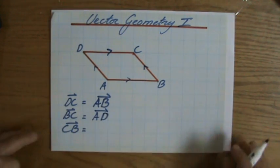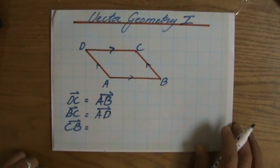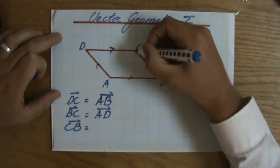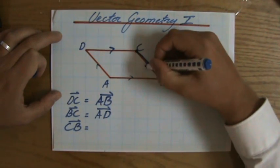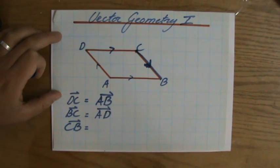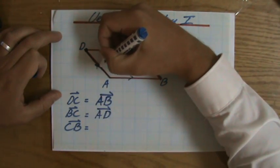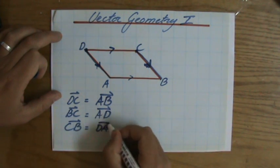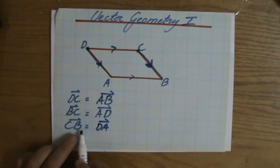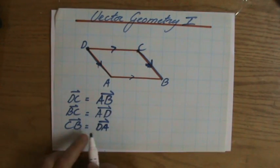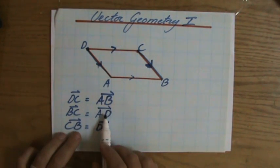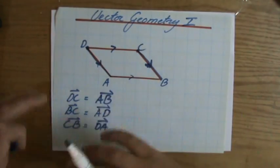vector geometry. Last one: CB, from C to B. Which other vector is the same? That is going to be from D to A, because direction matters. So CB is the same as DA, but CB is not the same as AD. They have the same magnitude, but the direction is opposite. So be careful, direction matters.